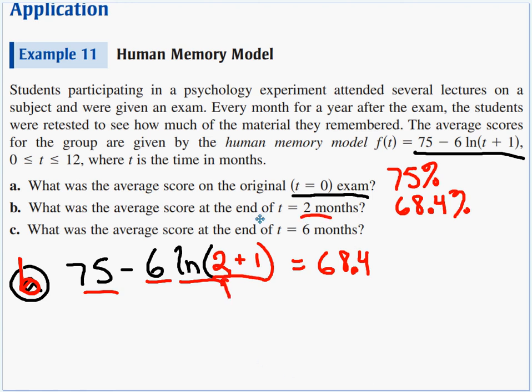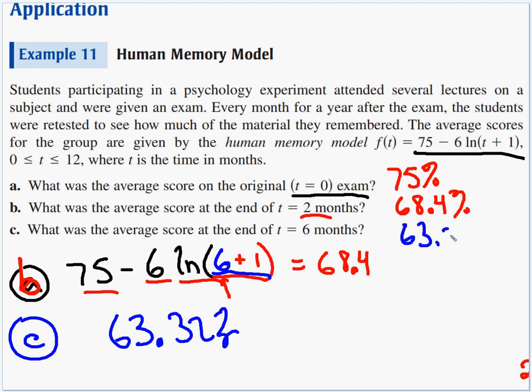Now we're going to make that 6 months after the test. So now it's going to be the log of quantity 6 plus 1. So that'll turn into a 7. We log it, times 6, subtract from 75. Part c, we're now down to 63.32%. 63.3%. As time goes by, people are going to forget more and more. And again, the best way to model that is using a log function.